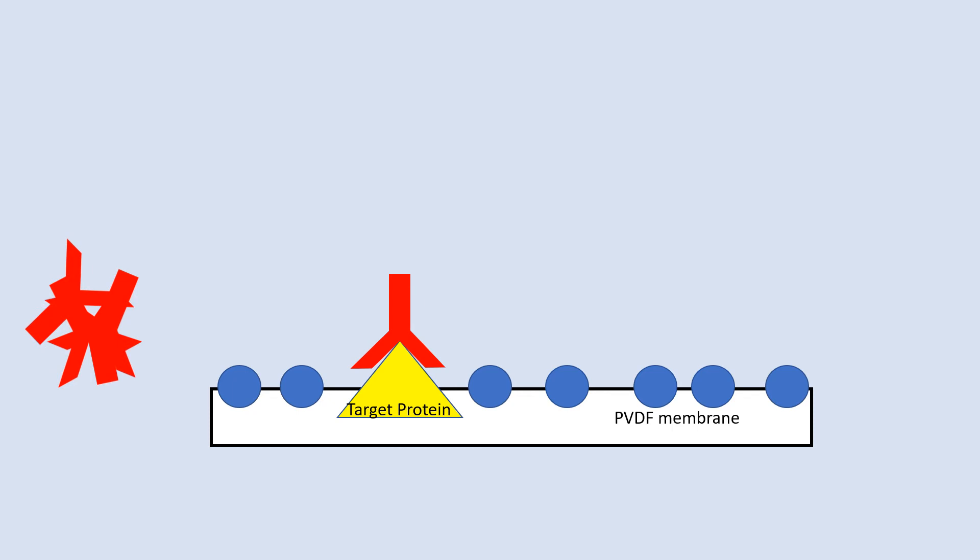After the incubation period is over, any excess primary antibody will be washed off. Washing away the excess will prevent nonspecific binding signals. Following the wash, the membrane is incubated with secondary antibodies that are specific to the primary antibody. The secondary antibody will be tagged with a reporter enzyme like horseradish peroxidase, commonly referred to as HRP.